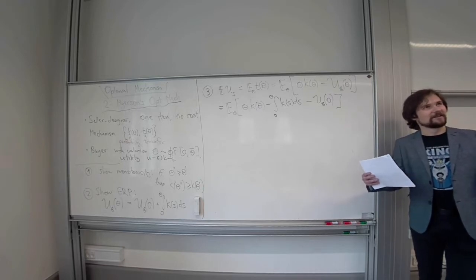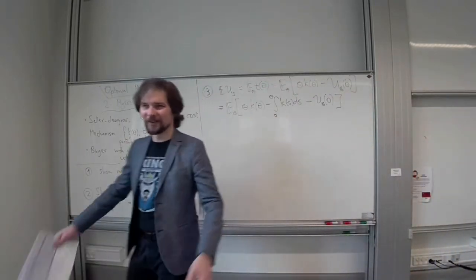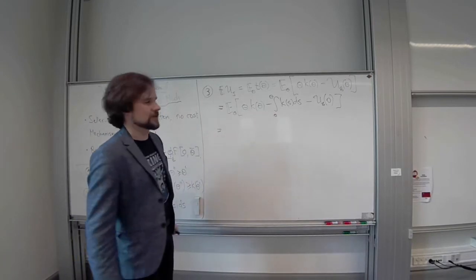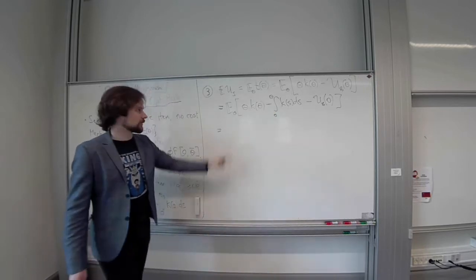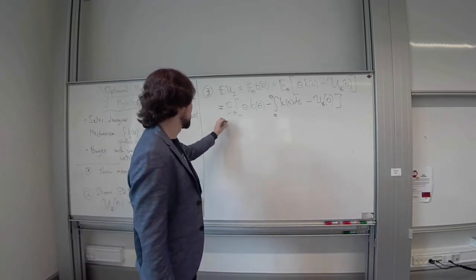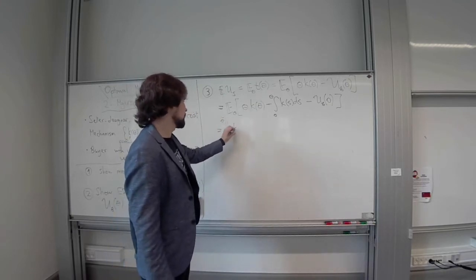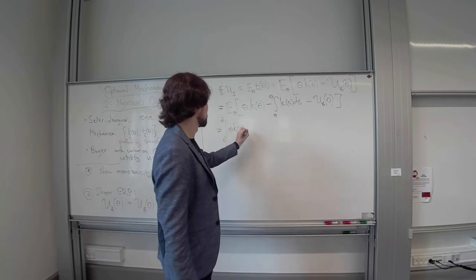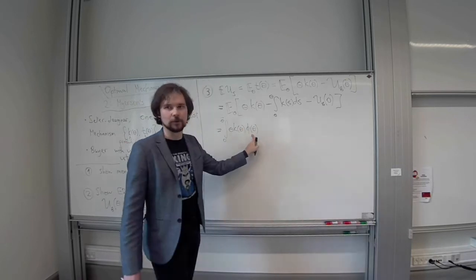From this point, we'll do manipulations that are hard to justify in advance but that will work — so watch and learn. Firstly, expectation is an integral of the expression over θ weighted by the pdf φ(θ). The expectation of a constant U_B(0) is just U_B(0). Recall: E[f(θ)] = integral over Θ of f(θ)·φ(θ) dθ, or equivalently integral of f(θ) dF(θ) where F is the CDF.